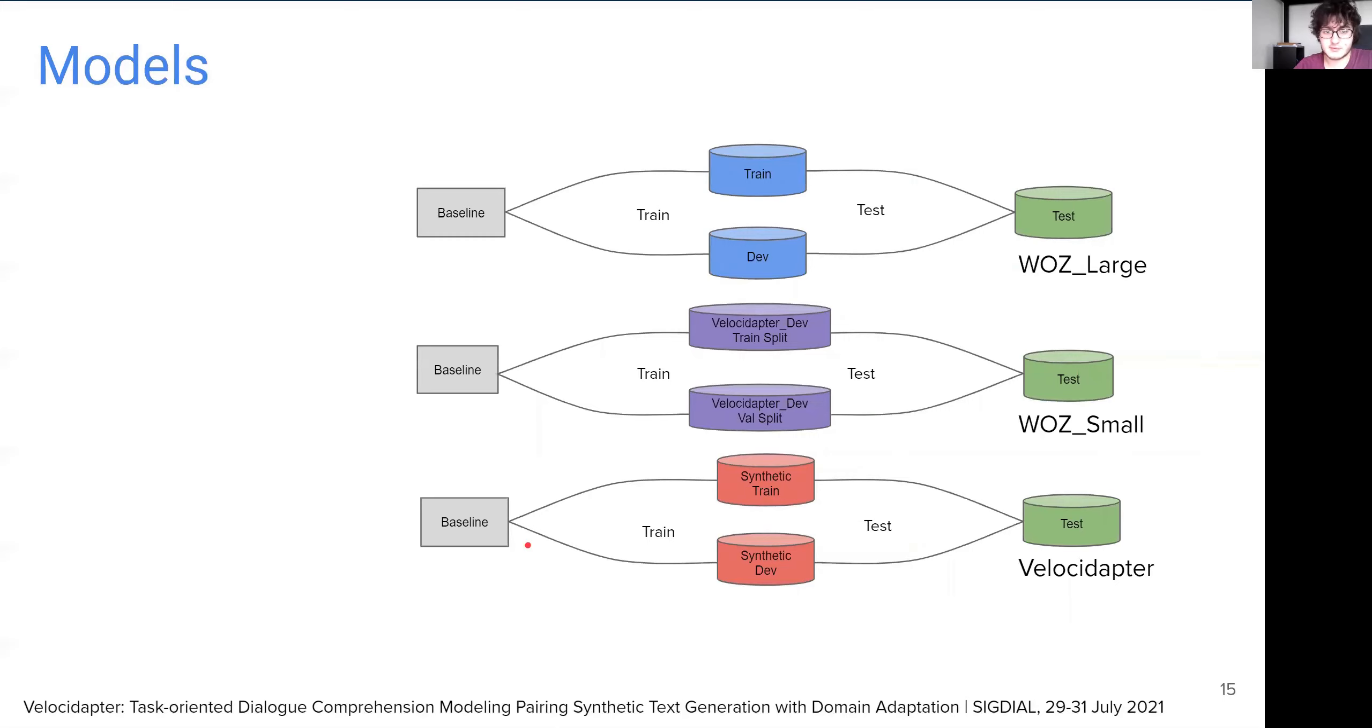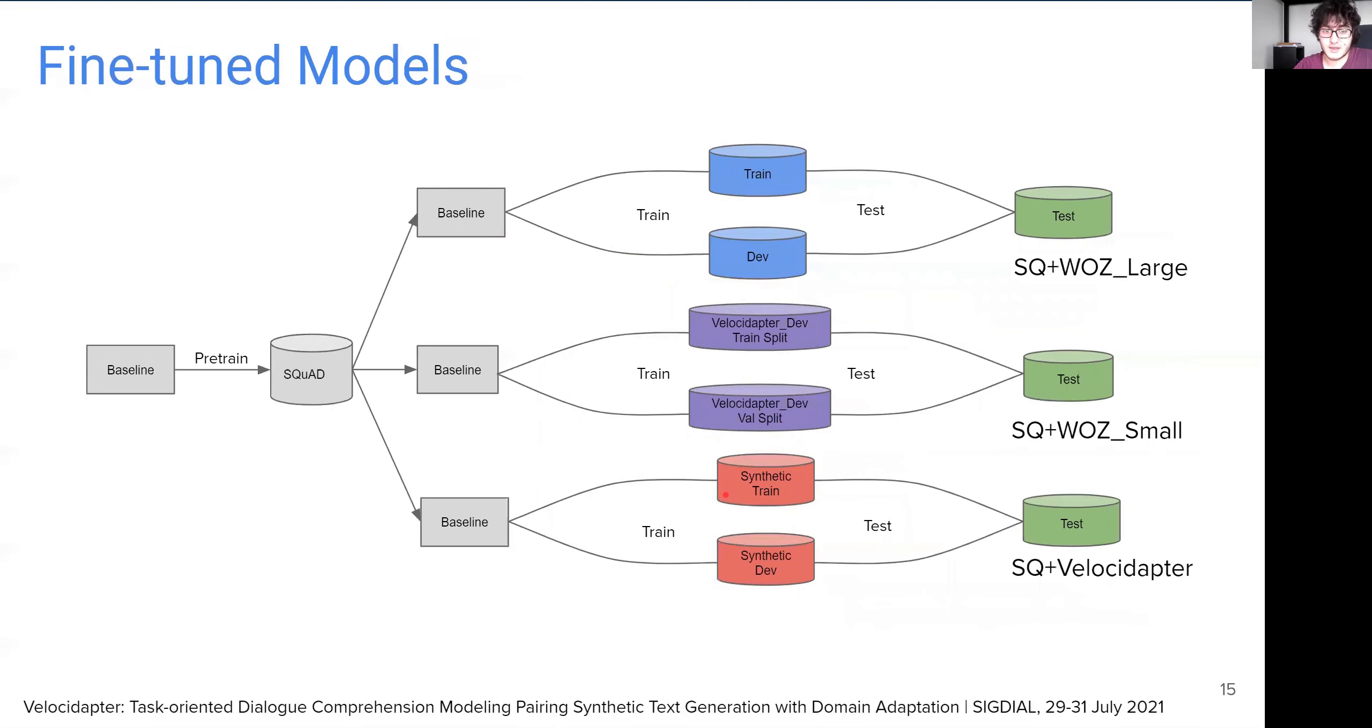We train six different models. The first one is W-LARGE, which uses the original data. This will act as an upper bound to our low resource settings. The next is W-SMALL. We train this model with the low resource development set that we created in the previous step. The third is VelocAdapter, which is trained with our synthetically generated data. Note that this model is comparable to the previous one, as we use the same development set for generating our synthetic data. We replicate these three settings with the addition of pre-training the baseline on SQuAD data, followed by fine-tuning on respective sets. We add the SQ prefix to each model's name in this setting.